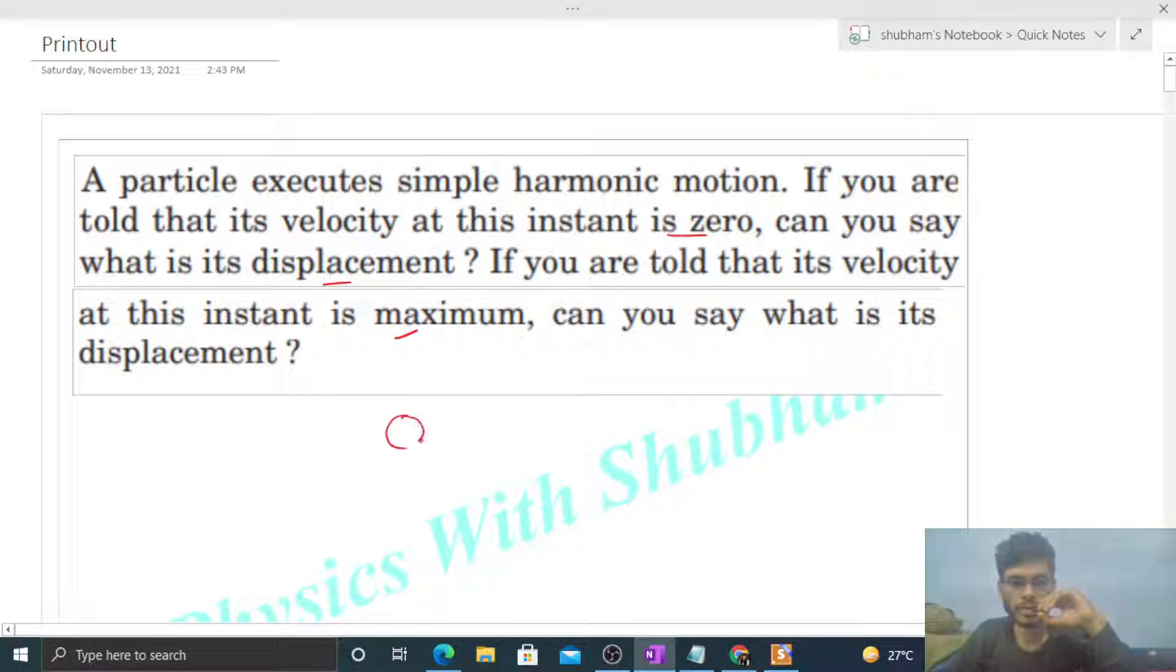So, when a particle executes SHM, let's say if the particle is at its mean position, that is x equals zero, then in that case the velocity of the particle is maximum. And when the particle is at the extreme position, in that case the velocity of the particle is zero, or you can say it is minimum. At the extreme position, velocity is zero, and at the mean position, it is maximum.